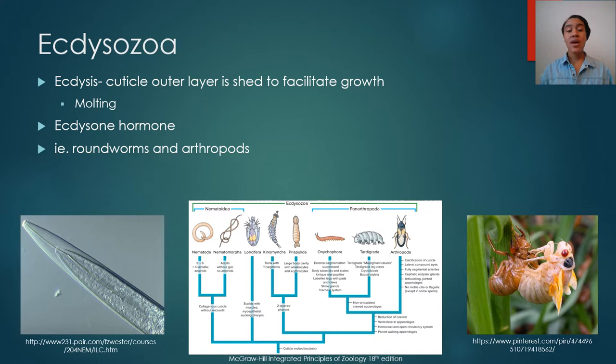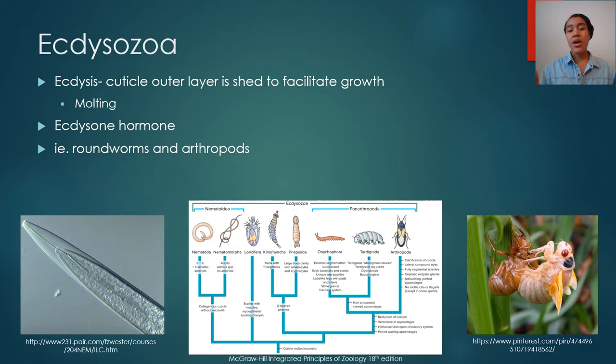There are many organisms that fit within Ecdysozoa, with a lot of different body plans. These organisms are very different from each other, but some that you may be familiar with are nematodes — which we're covering in this lecture — tardigrades, or little water bears, and then arthropods. Arthropods include all of our insects and crustaceans and various other organisms that fit within those groups.